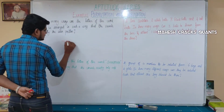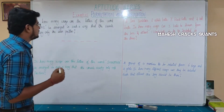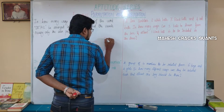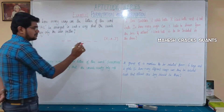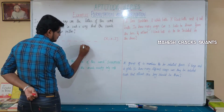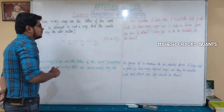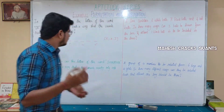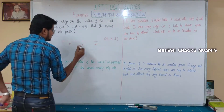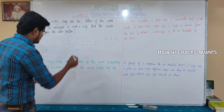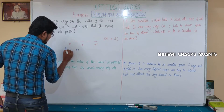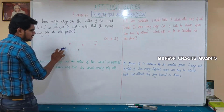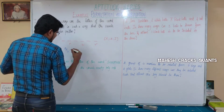There are six letters in DETAIL. The vowels are E, A, and I. These three vowels will be placed in the three even positions. Three places and three vowels — how many ways can you arrange them? The answer is 3 factorial ways, which is also written as 3P3. 3P3 means you reduce three times, which is exactly equal to 3 factorial.